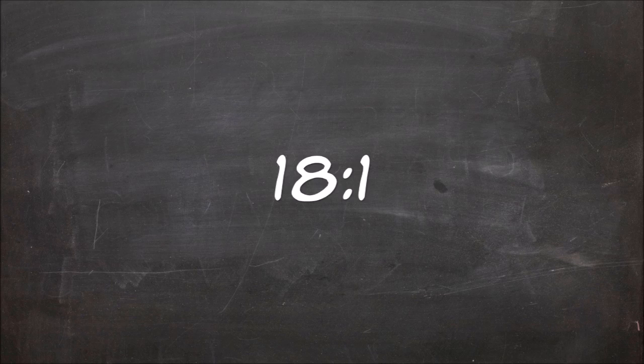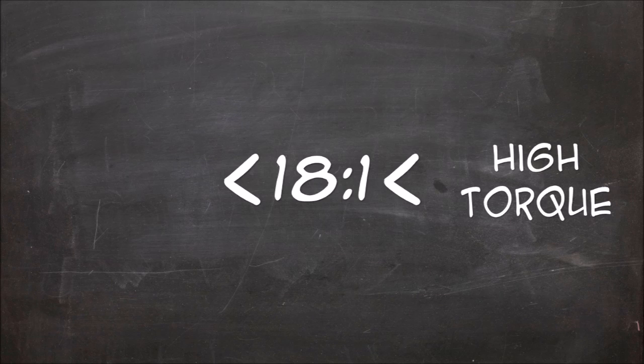If you read any forum, you notice that people say over 18 to 1 is a torque set and under 18 to 1 is a speed set. And there are rough estimates on how these sets translate to RPS. So here is how you use the info.